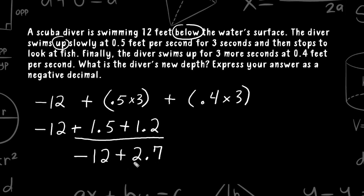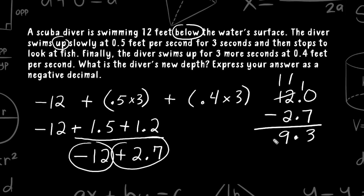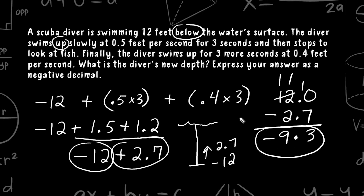We have a negative value and a positive value, so we subtract the absolute values. Taking 12.0 minus 2.7: we drop the decimal straight down, turn the 0 into a 10 and borrow from the 12 to make it 11. 10 minus 7 is 3, and 11 minus 2 is 9. The expression has more of a negative value than a positive value, so the negative wins out — the diver is still below the surface. Our answer is negative 9.3.